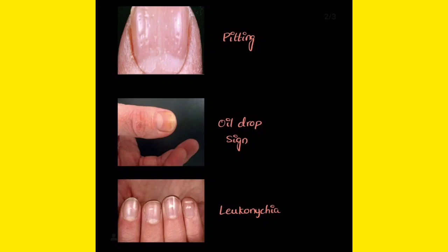Another sign is leuconychia. The name itself says it — leuco means white. You can see white stripe-like coloration on the nail. That is leuconychia. All these are very important: pitting, oil drop sign, and leuconychia, which indicate the patient is having psoriasis.